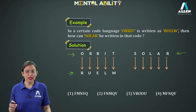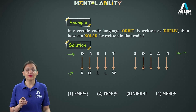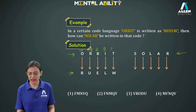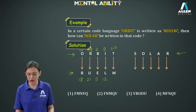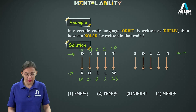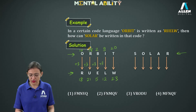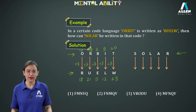When we talk about movement of letters, we use alphabet position values. O is 15, R is 18, B is 2, I is 9, T is 20. The code gives R=18, U=21, E=5, L=12, W=23. Finding the pattern: 15+3=18, 18+3=21, 2+3=5, 9+3=12, and 20+3=23. So the pattern is adding 3 to the position value of each letter.